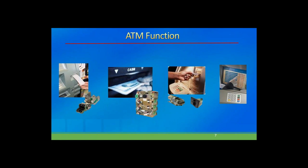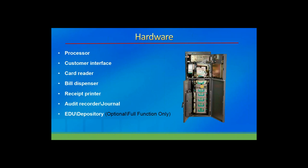ATM hardware can be broken down into the core, which is the computer, and the customer interface. Every ATM must have a device that reads and interprets card data, a bill dispenser, a receipt printer, and an audit recorder — some type of journal that used to be paper but is no longer consistent. Newer units also have depositories that take in envelopes or envelope-less deposits.